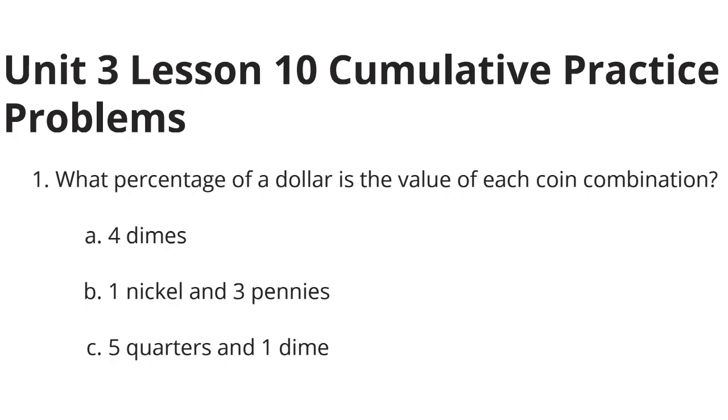Four dimes. Well, each dime is worth 10 cents. And so if we have four of those dimes, that's going to be worth 40 cents. And since a dollar is 100 cents, 40 out of 100 is our fraction, which is 40%.